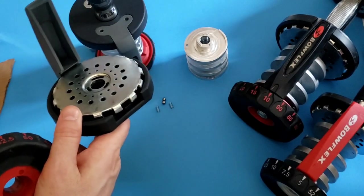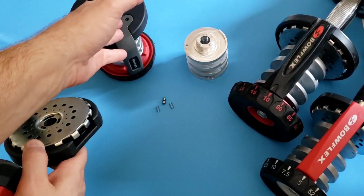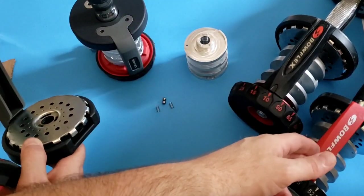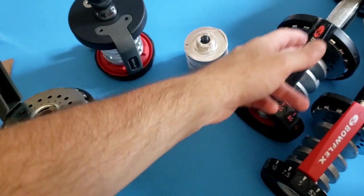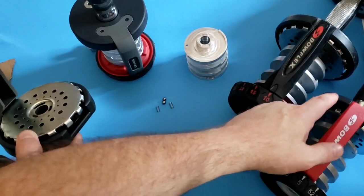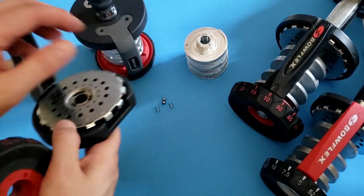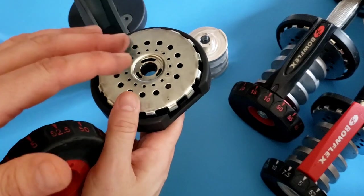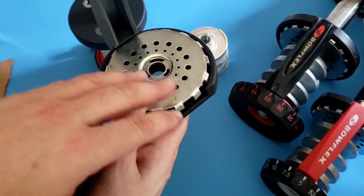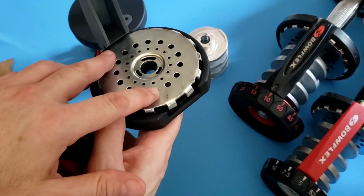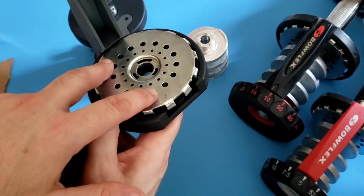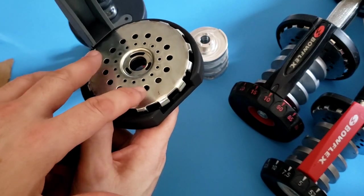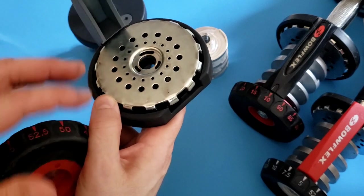Doesn't make a difference if you have the 552 series 1, the series 2, or the 1090. They all, as you can see, have the same assembly, and the assembly relies on a locking mechanism as well as two springs and two ball bearings.